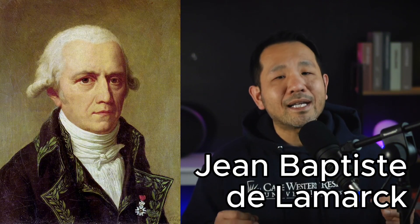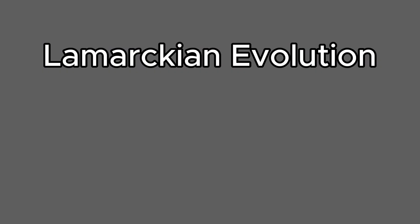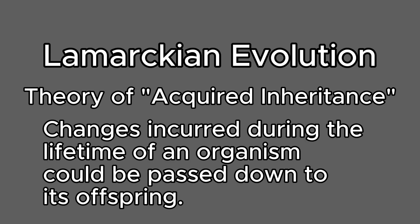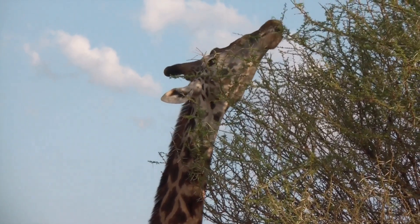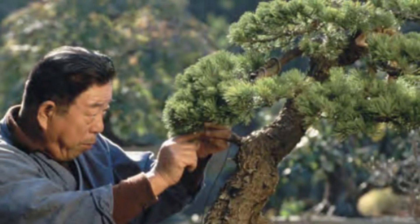Darwin wouldn't be the only one contemplating these ideas. In the late 18th century, French biologist Jean-Baptiste de Lamarck got pretty close to the right idea but missed it by a smidgen. Lamarck proposed that organisms could change due to acquired inheritance — changes incurred during the lifetime of an organism were passed down to offspring. For instance, a giraffe stretching its neck to reach higher leaves could give rise to giraffes with slightly elongated necks. This isn't quite how it works, but Lamarck's work paved the way for thinking about how species could change over time through natural mechanisms.